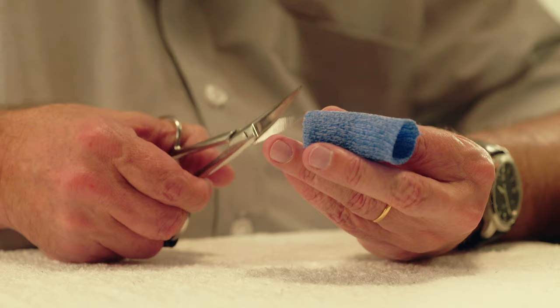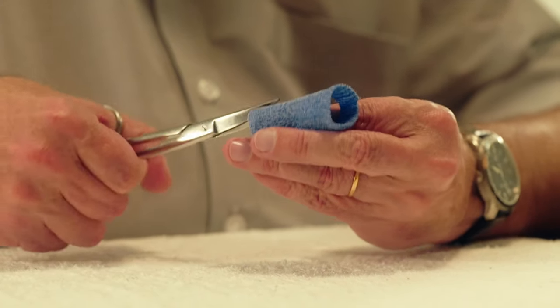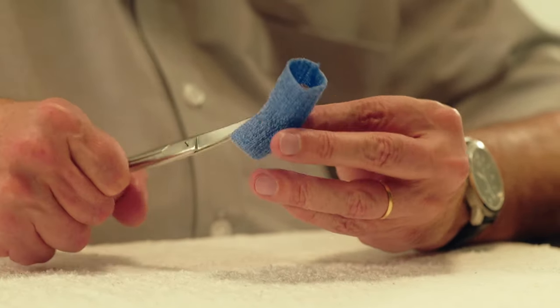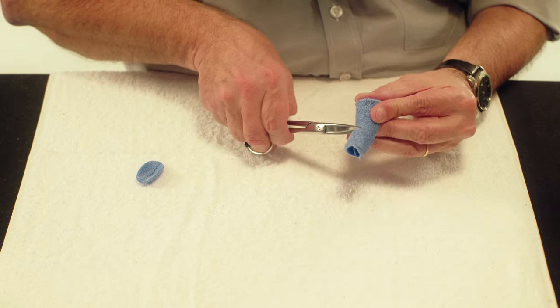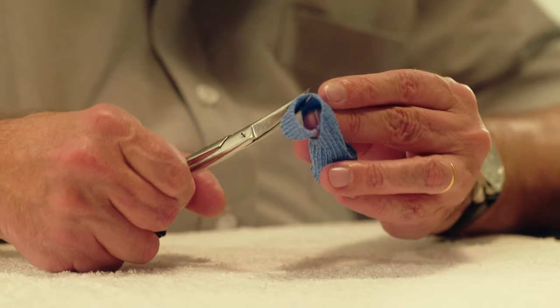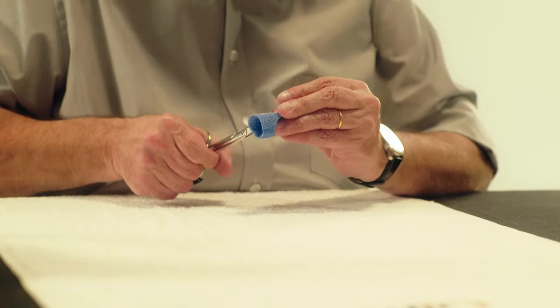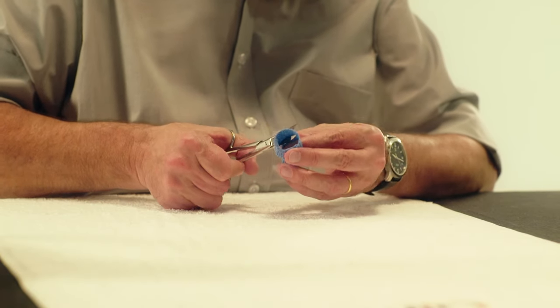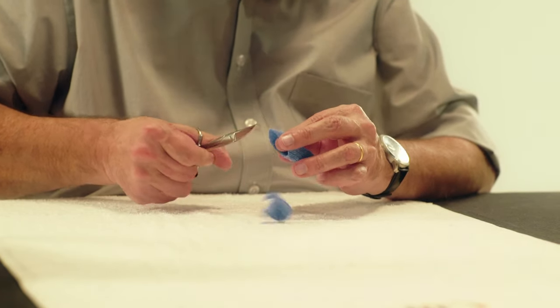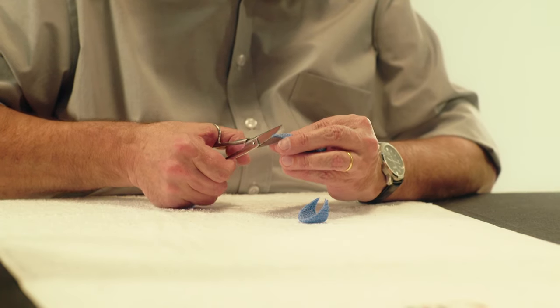Trim the orthicast from the distal dorsal surface almost to the flexion crease of the PIP joint. Repeat from the proximal volar surface almost to the flexion crease of the PIP joint, leaving about five millimeters of material covering the flexion crease of the PIP joint.